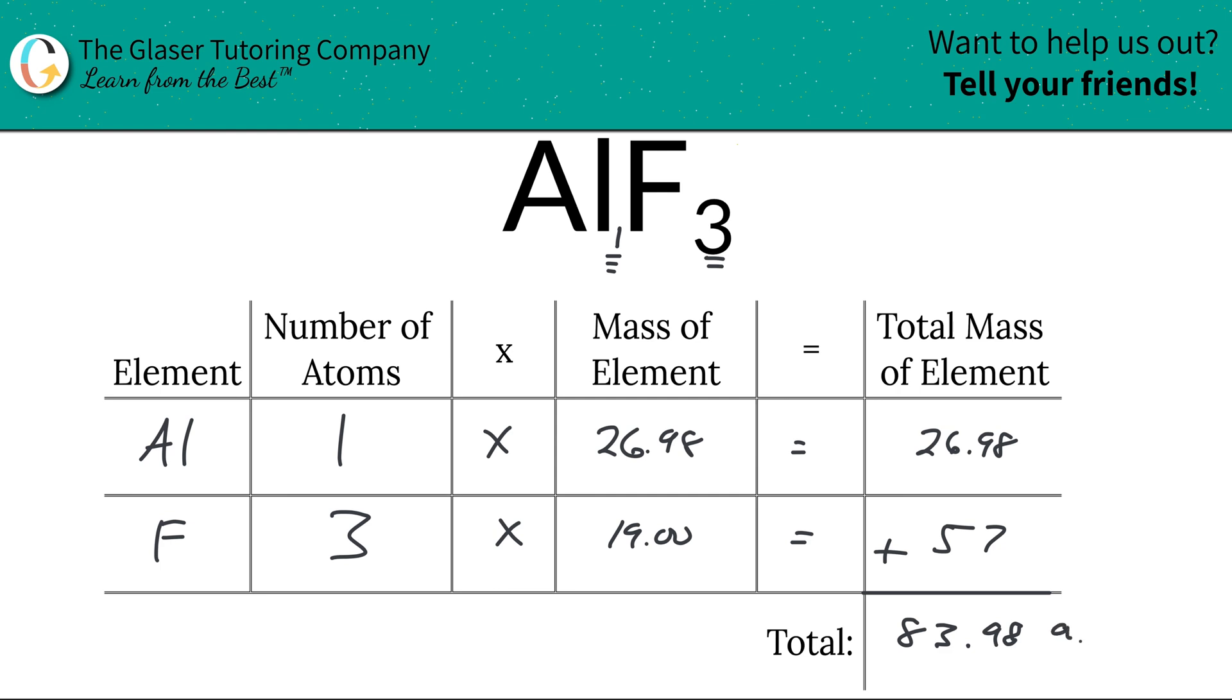So now since we found the total mass of 83.98, now it really doesn't matter if you call it grams per mole or amu here. Because we're calculating percent by mass, I'm just going to call it grams per mole. And the next step after we calculate this molar mass for aluminum fluoride is to calculate the percentages. It's going to be as easy as pie.